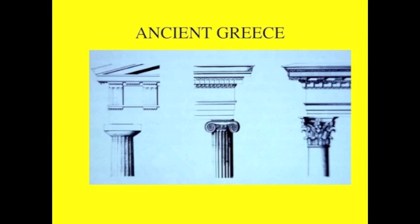Let's backtrack a little bit and look at some of the material we covered last time. What am I showing here? They're different styles of columns. What do we call this system of a horizontal and a vertical? We call it post and beam if it's not ornamented. But when there is this kind of codified system of ornamentation, we have another word. They're the orders.